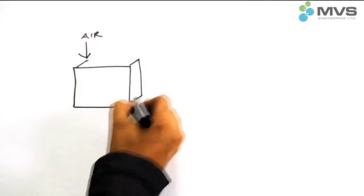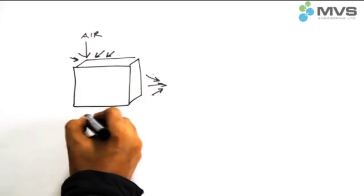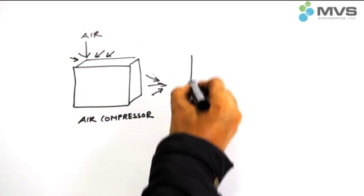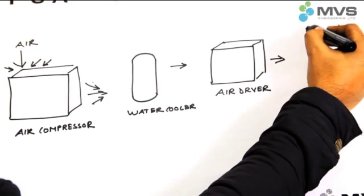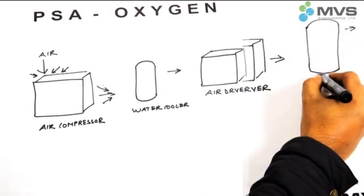In an on-site oxygen generator, the atmospheric air is compressed using an air compressor. This air is compressed and made moisture-free using an air dryer. The dry air is collected in an air receiver tank.